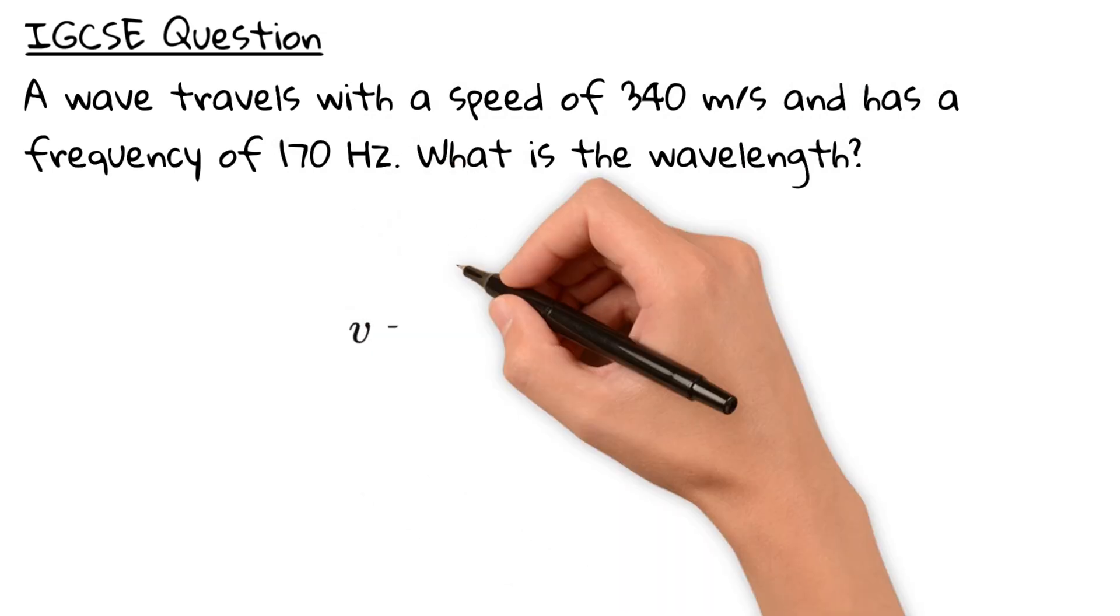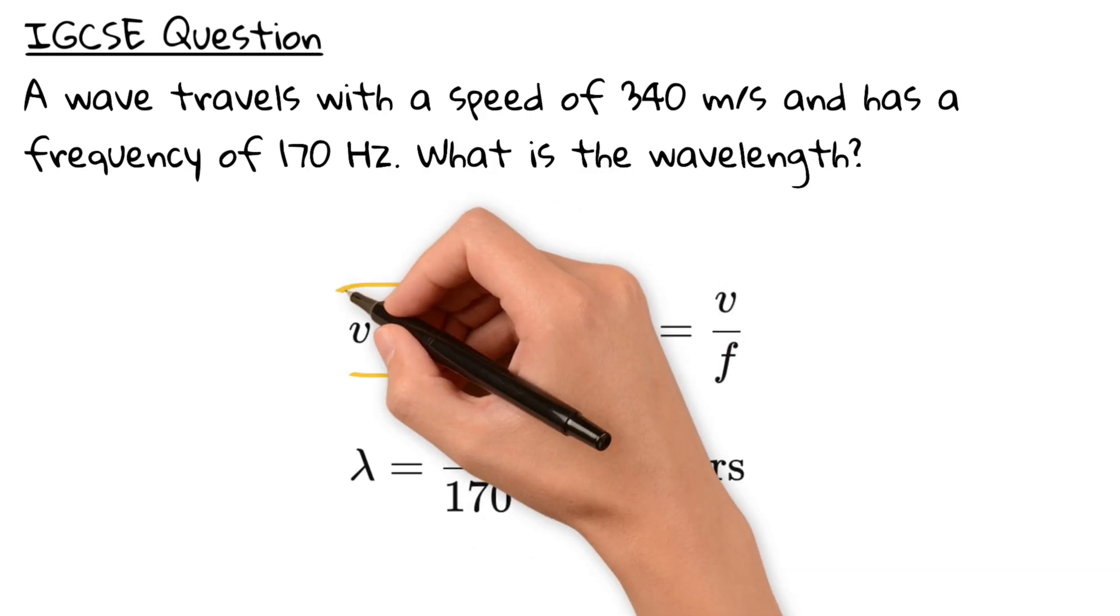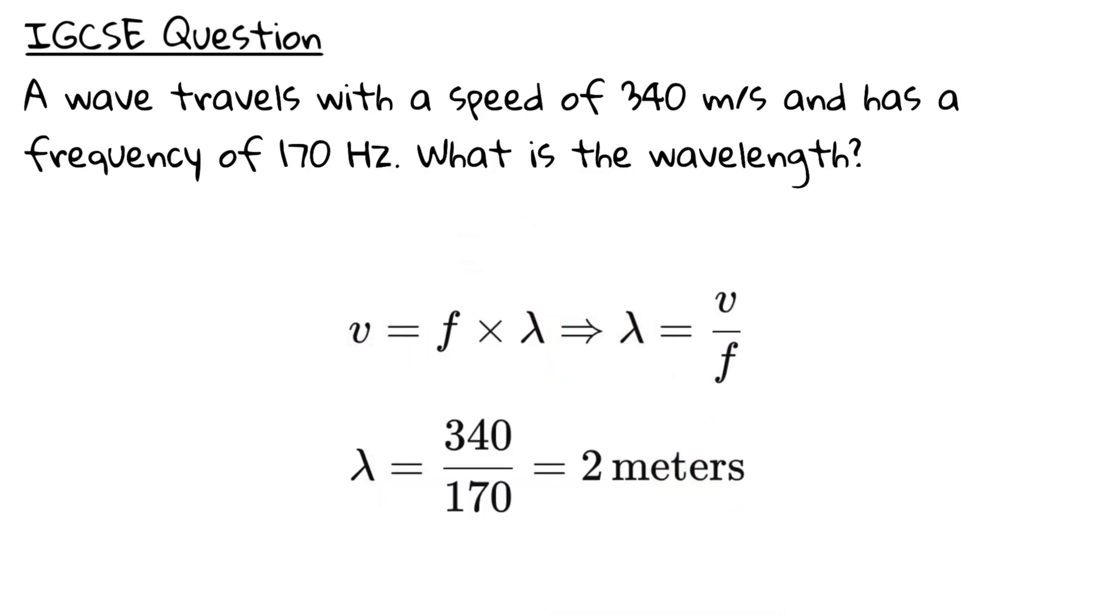We use the formula speed equals frequency times wavelength to rearrange it as wavelength equals speed divided by frequency. Now we substitute. 340 divided by 170 is 2 meters. So the answer is the wavelength is 2 meters.